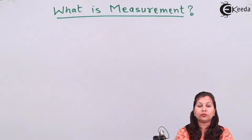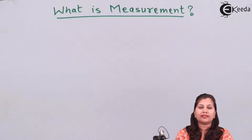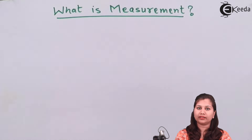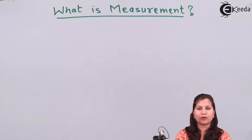The word measurement tells us about the property of something. Measurement tells us how long an object is, how heavy it is, or how much it can hold. So in simple terms, measurement tells us about the property of something.